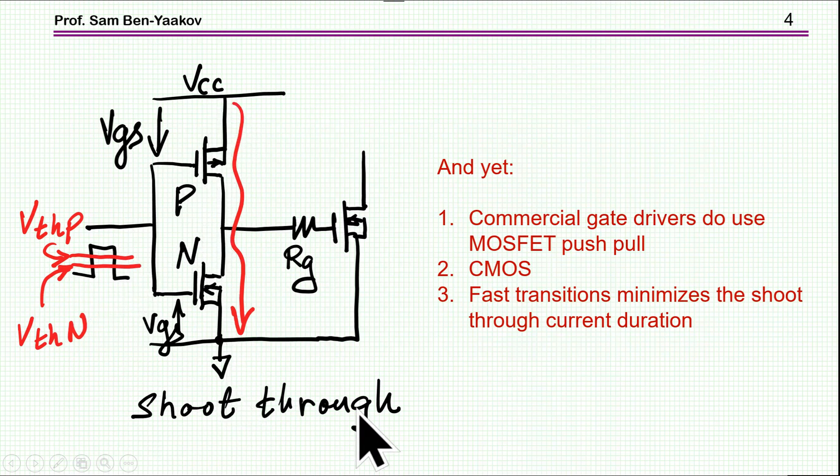Consequently, you are going to have a shoot-through, a high current passing through, which is not so good. In fact, it actually could be very bad, because the RDS-on of the transistors are low, and therefore, you might have a very high current passing through here.